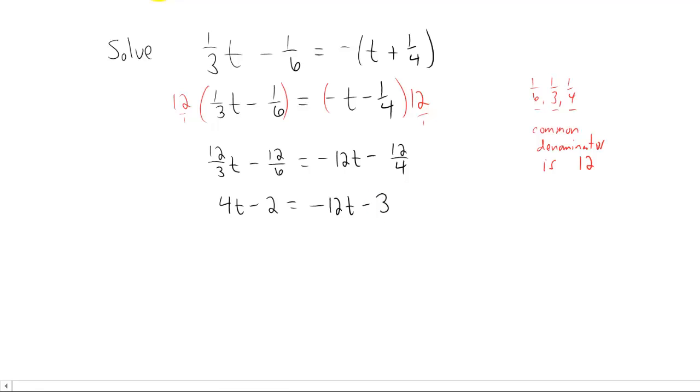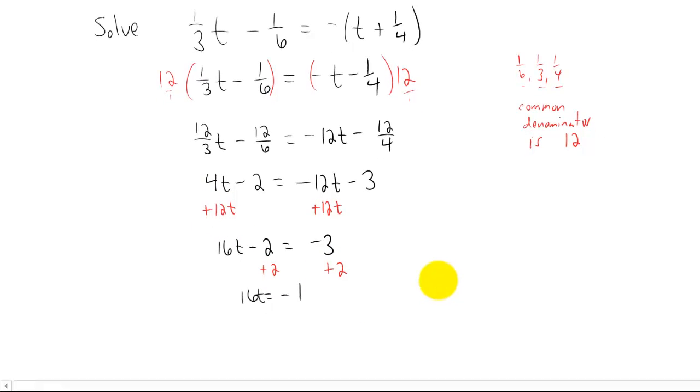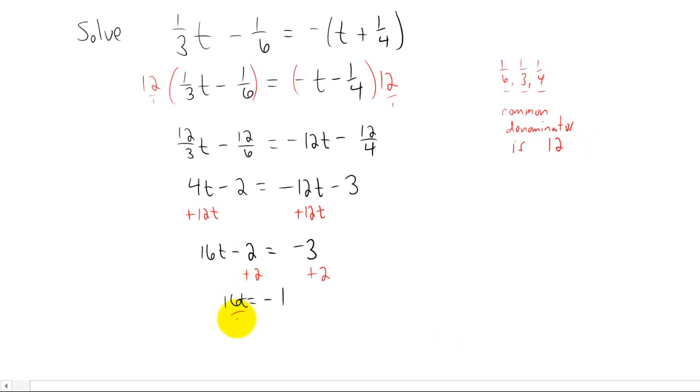And it's something that, at this point, is much easier to solve. Let's do it. I'm going to add 12t to both sides of this equation. And I'm going to add 2 to both sides of this equation. Again, we have to divide to isolate the variable t. And I'm getting t is negative 1 over 16. Again, that's going to be pretty tough to check by hand. It's possible to do it. If you happen to have a calculator and you're doing this as homework, go ahead and check it on your calculator. Or do whatever your instructor asks you to do.